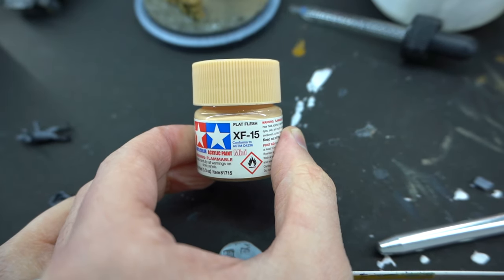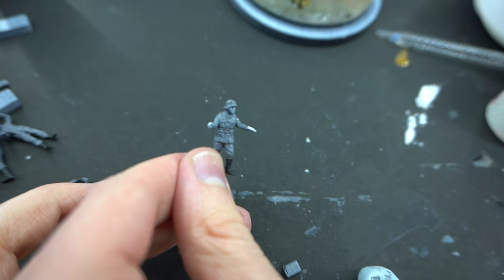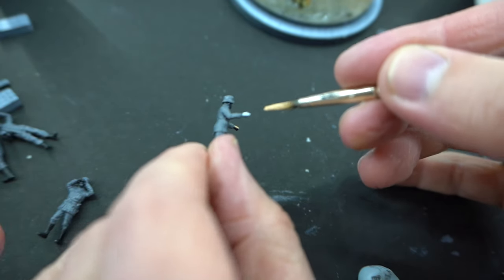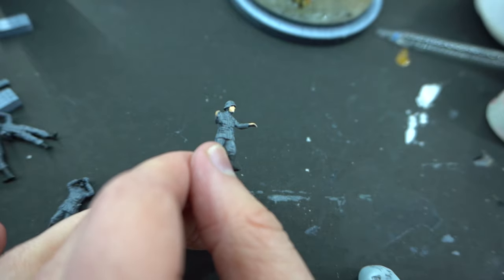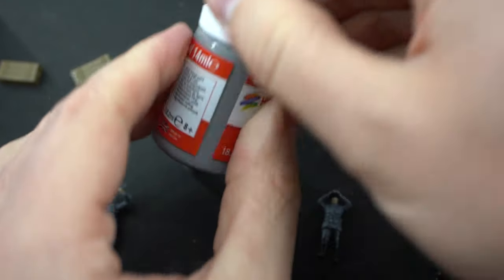I then moved on to use this flat flesh acrylic from Tamiya on the hands and faces of all of the figures. I am using two of the figures included in the set with the armoured car, but I have some 3D printed ones as well.